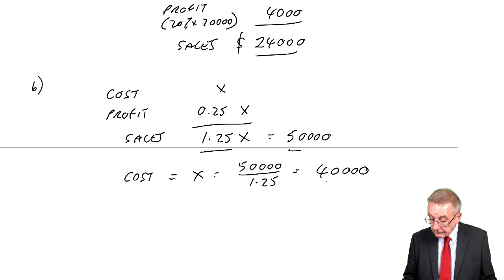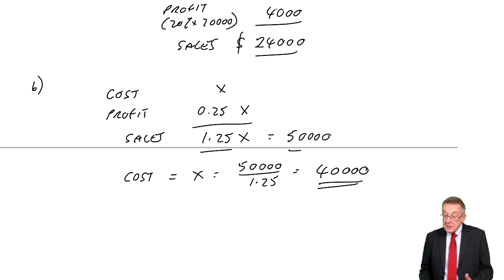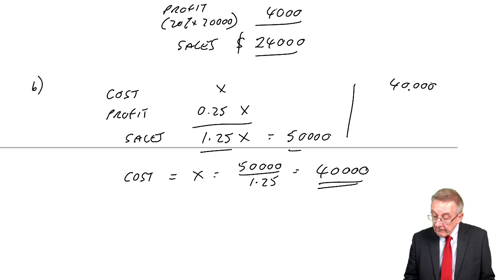And of course it checks, although don't waste time in the exam checking, you must make sure you're confident. But if the cost is 40,000, the markup, the profit, 25% of 40,000 is 10,000. It does indeed give us sales of 50.